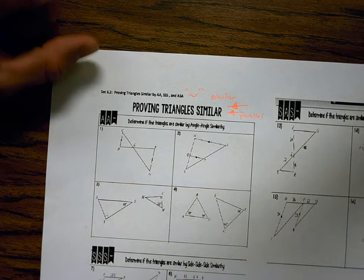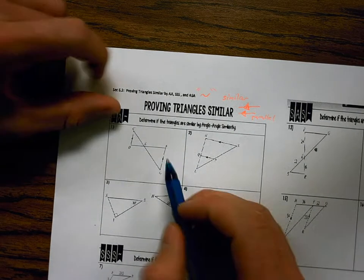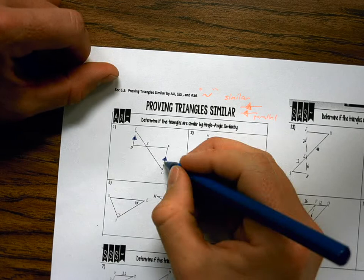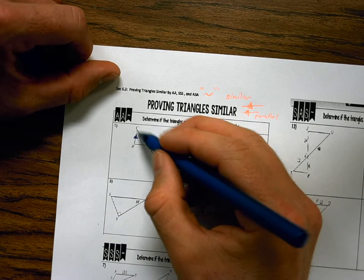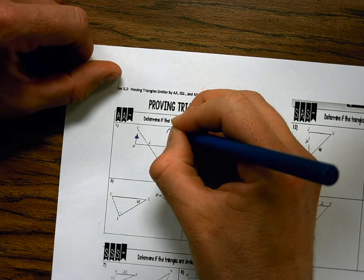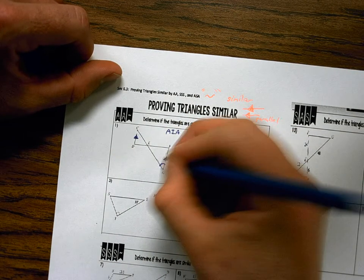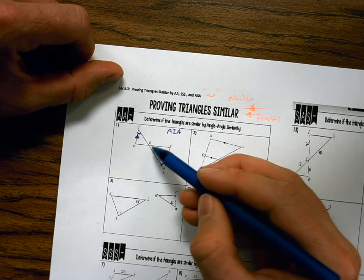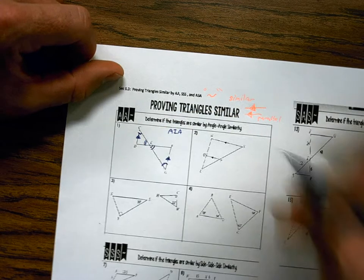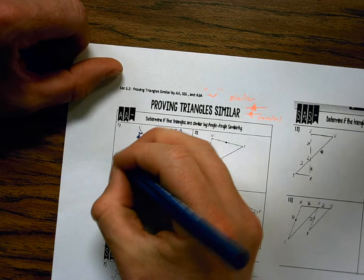Okay, looking at number one. Determine if the triangles are similar by angle-angle similarity. I have two parallel lines. When I have two parallel lines cut by a transversal, what does it create? Again. Alternating interior angles. Alternating interior angles. So these two angles are congruent. These two angles are vertical angles. I know those two angles are congruent. So is this enough information to say that these are similar by AA? Yes. Yes.